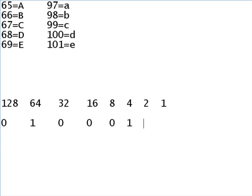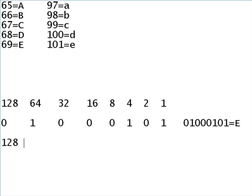Two goes into one zero times. So the binary code is 0, 1, 0, 0, 0, 1, 0, 1 for capital E. Actually that equals capital E — sorry, back off — just showing you all else.